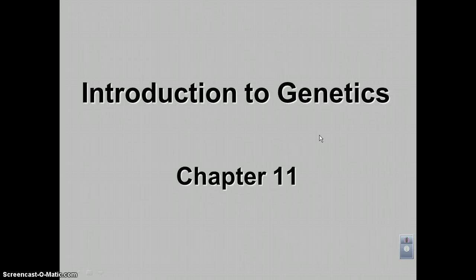Welcome to podcast number one from Chapter 11, Introduction to Genetics. This will be the Punnett Square chapter where we're going to learn things about genotype ratio, phenotype ratio, dominant, recessive, co-dominance, etc. It's going to be a very challenging chapter. You want to make sure that you are working on all of your assignments and studying for your tests, as they're going to be quite challenging this time.